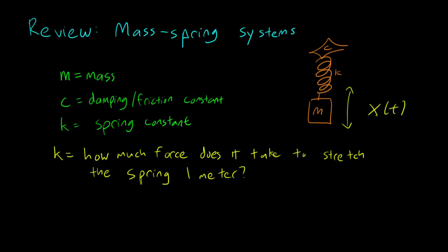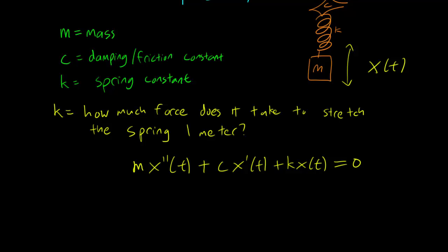So the way to model this position function x is just to write mx'' + cx' + kx = 0. And these are all three terms are forces, so for instance you have f equals ma on the first term, and f equals kx Hooke's law on the last term. And this is for unforced systems, so this is for the case when we don't have an external force also acting on the spring.